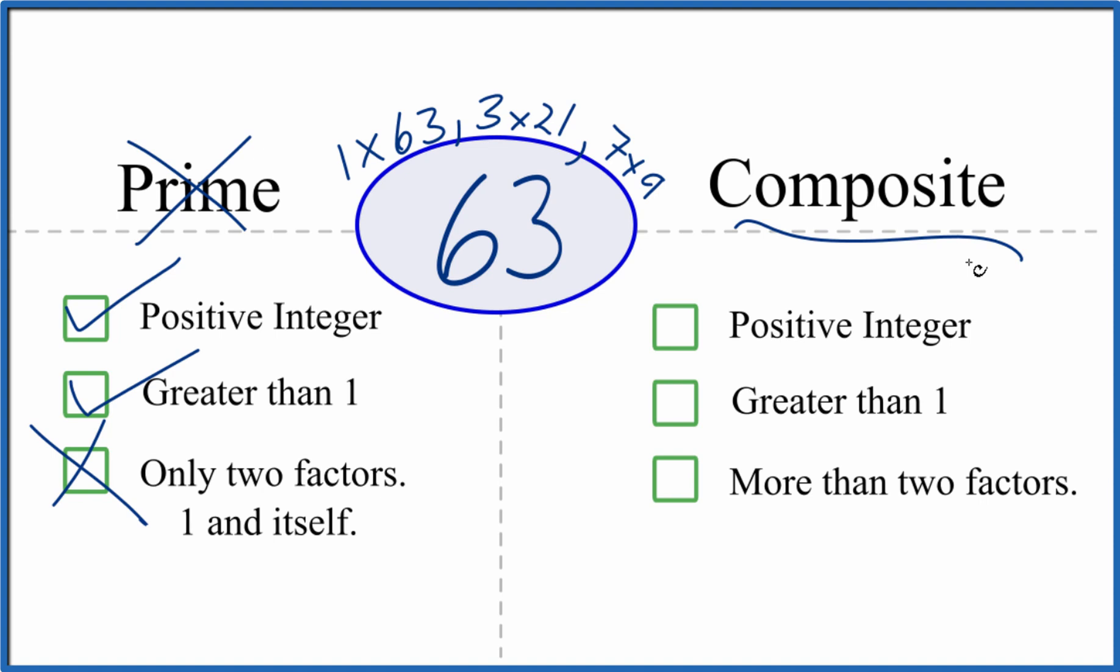But is it a composite number? It's a positive integer, greater than 1. And are there more than two factors? 1, 2, 3, 4, 5, 6 factors. More than two factors? That makes 63 a composite number.